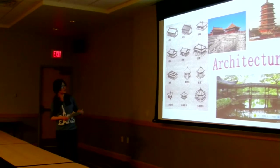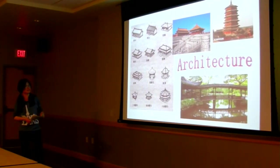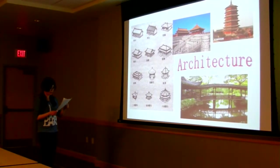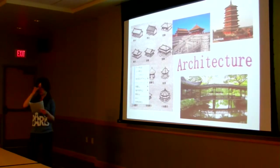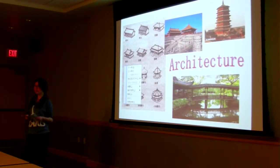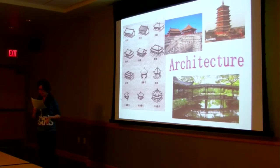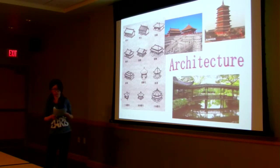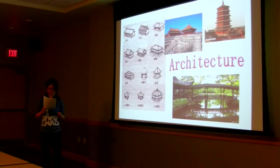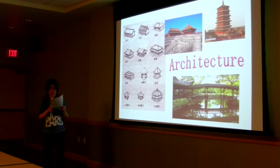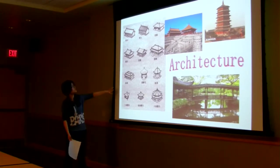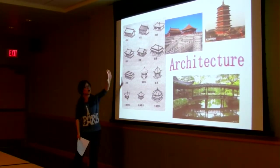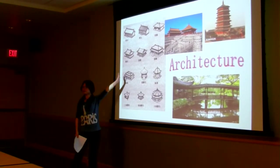Now let me introduce Chinese traditional architecture. It is also as old as Chinese civilization, dating back to the Tang dynasty. Chinese architecture has had a major influence on the architectural styles of Korea, Vietnam, and Japan. This chart shows the main roof styles of traditional Chinese buildings.